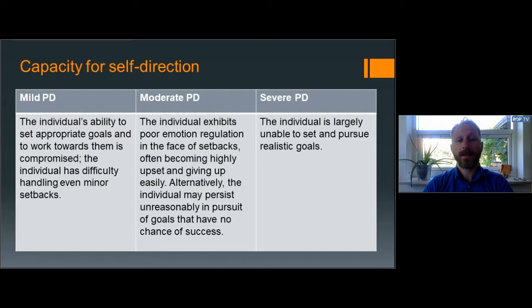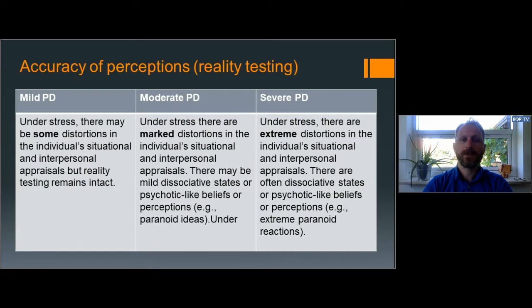In terms of the capacity for self-direction, mild personality disorder may involve a compromised ability to set appropriate goals — for example, the ability to plan, choose and implement appropriate goals. In contrast, severe personality disorder may often involve an inability to set and pursue realistic goals. In terms of the accuracy of situational and interpersonal appraisals under stress, mild personality disorder may involve some distortions as often seen in emotional disorders. In contrast, severe personality disorder may be characterized by extreme distortion corresponding to psychotic-like perceptions.